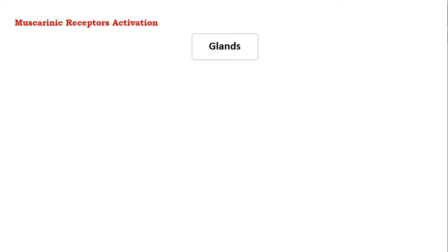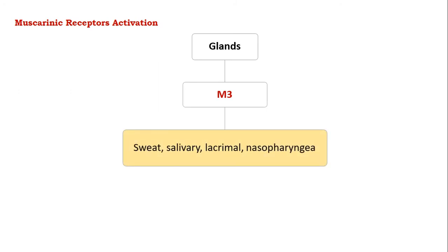Coming to the effects of muscarinic receptor activation with respect to glands, the M3 receptor gets activated in the salivary gland, sweat gland, lacrimal gland, as well as the nasopharyngeal tract, leading to increase in glandular secretions.